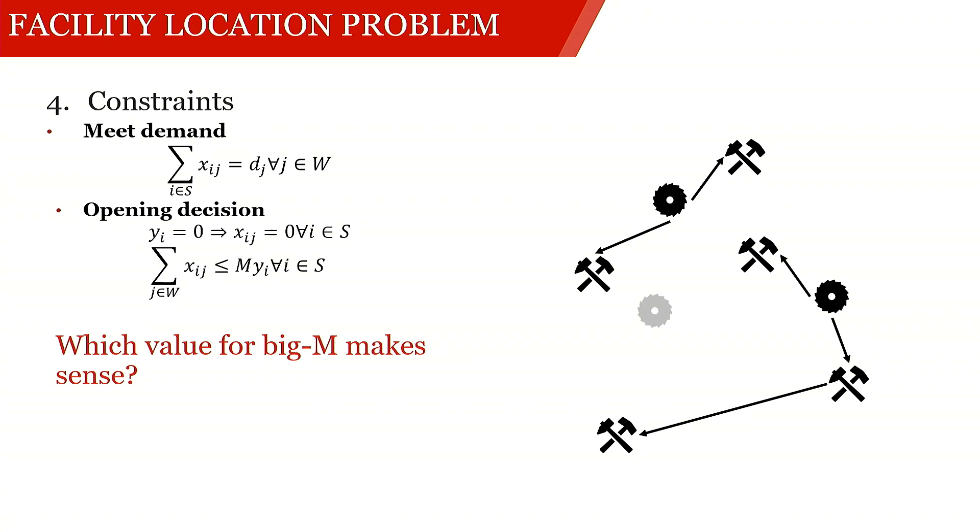So the m in this case is just a big M, which means that if the right hand side is 0, if the yi is 0, which means that the entire flow that leaves this sawmill also has to be 0. What I would like you to think about is which values for big M make sense in this context.